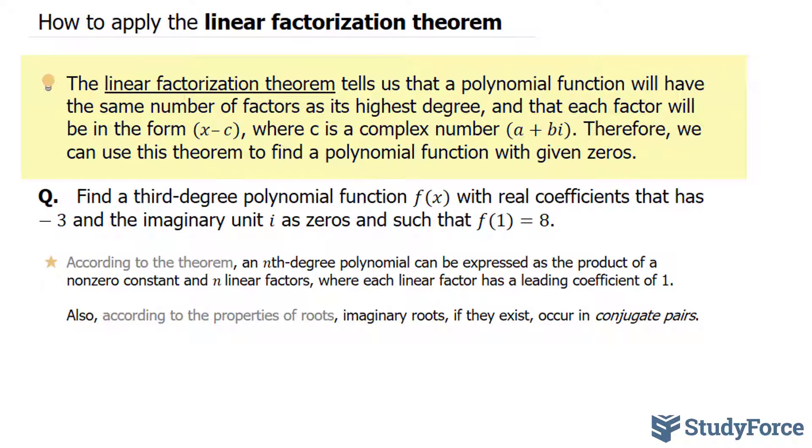The theorem states that a polynomial function will have the same number of factors as its highest degree, and that each factor will be in the form (x - c), where c is a complex number (a + bi). Therefore, we can use the theorem to find a polynomial function with given zeros.